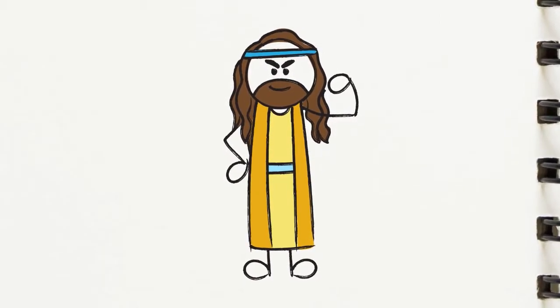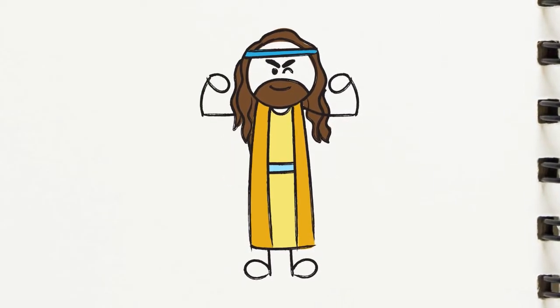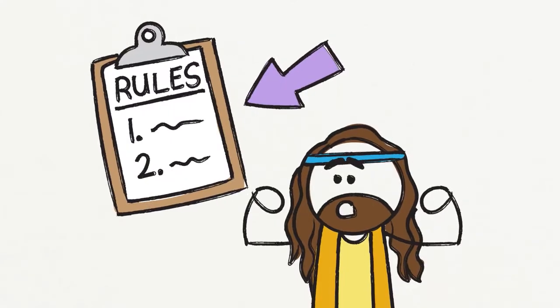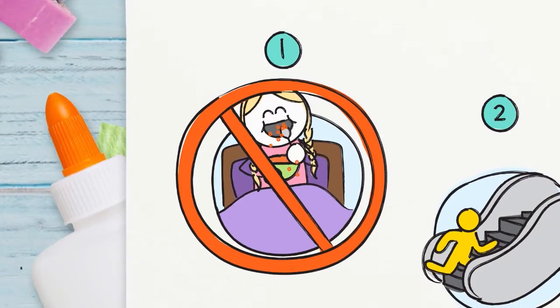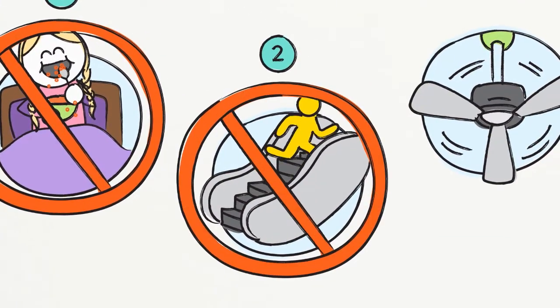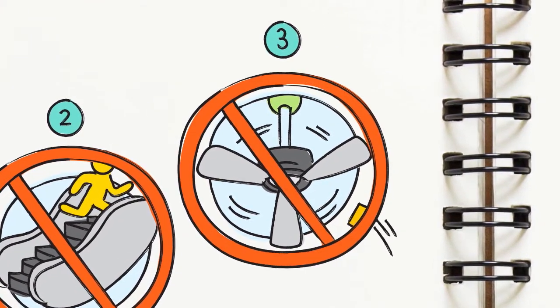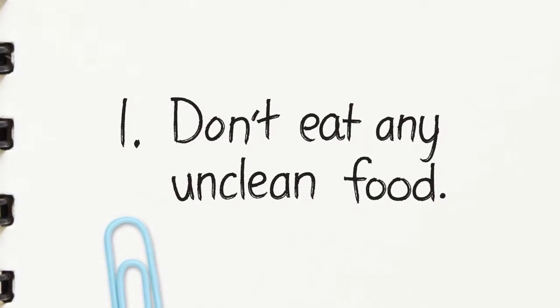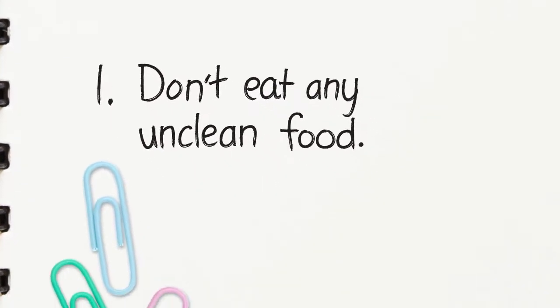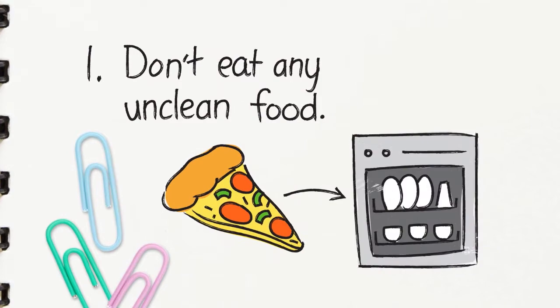Lex Luthor? Darth Vader? Cruella de Vil? Nope, their enemies were, wait for it, the Philistines. Philistines? Who are they? They were a really strong group of warriors. But in order for Samson to keep his special supernatural strength and help save God's people, there were a few rules he had to follow. Like don't eat spaghettios in bed, or don't run up an escalator, or never ever throw cheese at a moving ceiling fan?